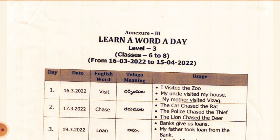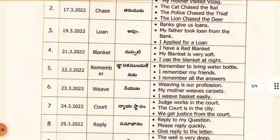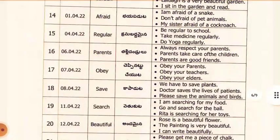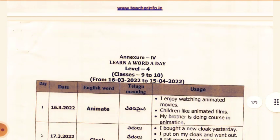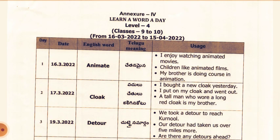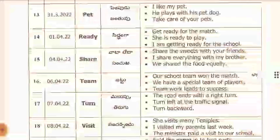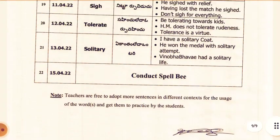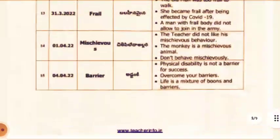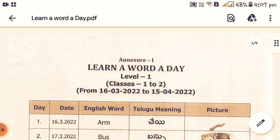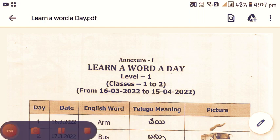For level 3, 6th class to 8th class, these are the words. For level 4, 9th class and 10th class, these are the words. This is all about the program, Learn A Word A Day, for level 1 to level 4. Thank you.